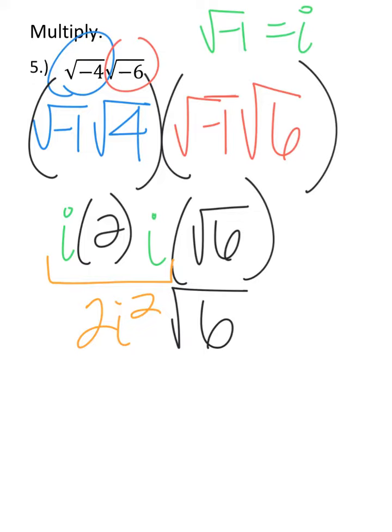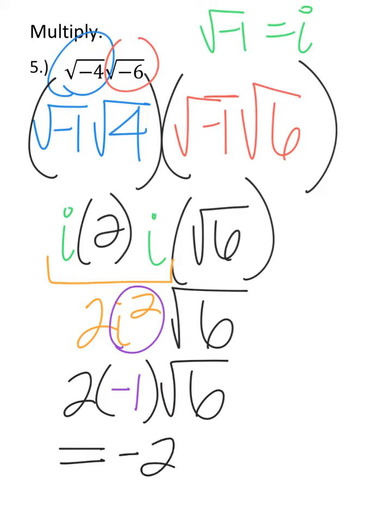So, let me make that purple, i squared equals negative 1 times 2 times the square root of 6, and so we're going to clean this up. 2 times negative 1, negative 2 times the square root of 6, and we can't reduce the square root of 6 further, so this is our final answer.